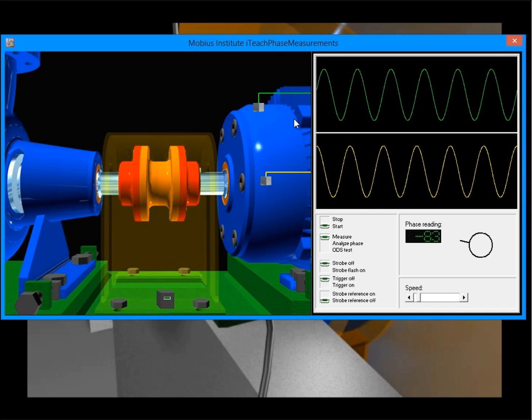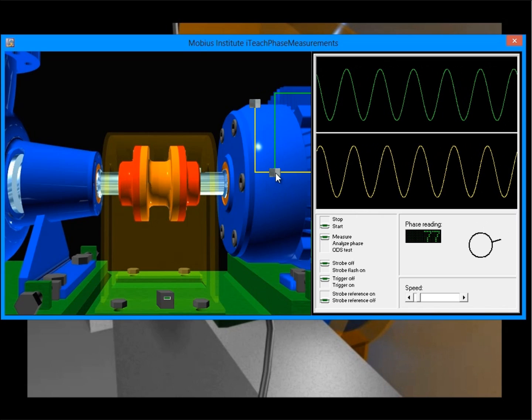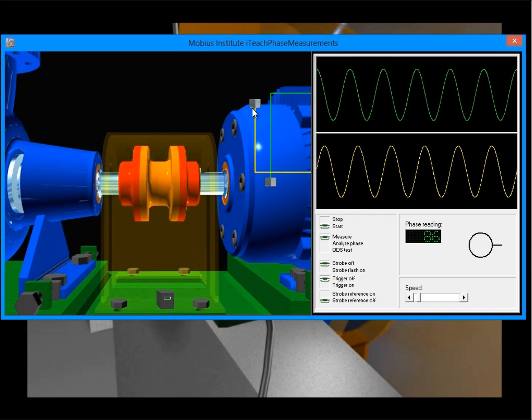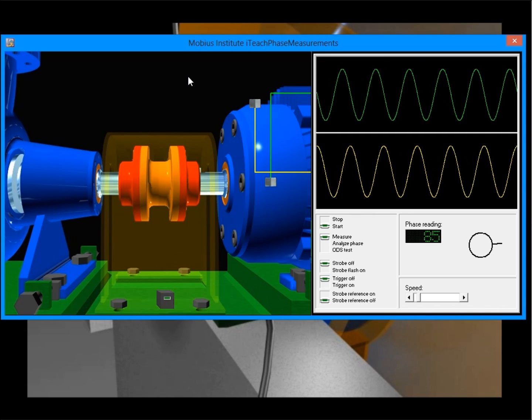Instead we can use two accelerometers in a two-channel analyzer and do the same sort of thing. We can see a 90 degrees phase shift. It's easier to do this way, we don't have to stop the machine.